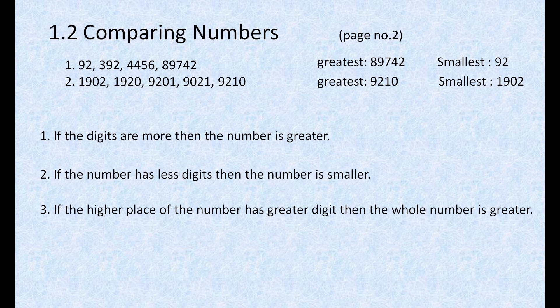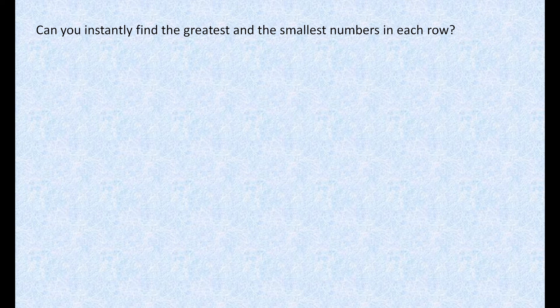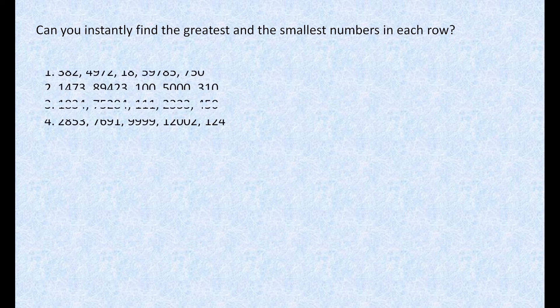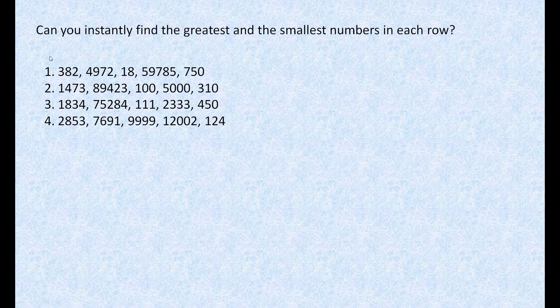Let's move to the next question. On that same page, we have another question: 'Can you instantly find the greatest and the smallest number in each row?' Yes, we can find them by using the three rules. We have four examples. Let's first look at the first example, which has the numbers 382, 4972, 18, 59,785, and 715. How are we going to find out?